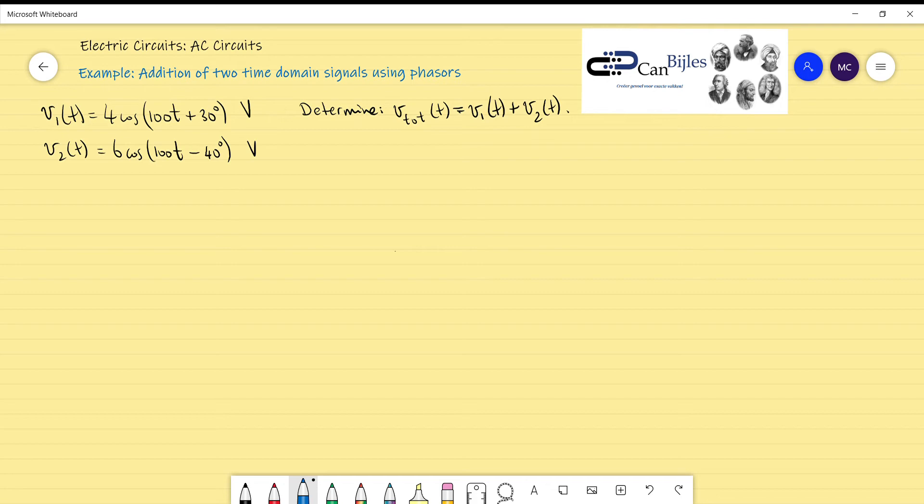What we want is a rectangular expression for V1, which is given here in time domain, and we would like to have the rectangular representation of V2, which is given here in time domain. So both of them will be converted to the rectangular form in the complex form.